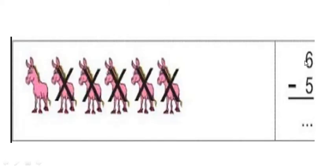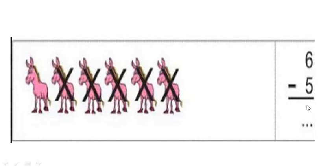The sum is 6 minus 5. There are 6 objects. Out of that, we have to reduce 5 objects: 1, 2, 3, 4, and 5. Now see how many objects are remaining — 1. So 6 minus 5, we get 1.